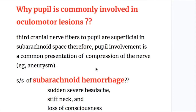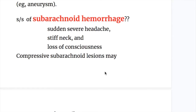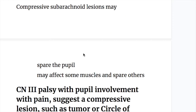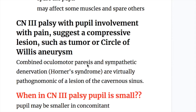The signs and symptoms of subarachnoid hemorrhage are sudden severe headache, stiff neck, and loss of consciousness. Compressive subarachnoid lesions may spare the pupil and may affect some muscles while sparing others. Cranial nerve 3 palsy with pupil involvement and pain suggests a compressive lesion such as a tumor or a circle of Willis aneurysm.